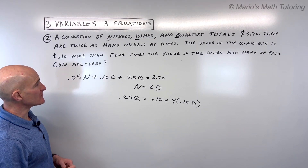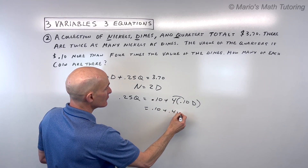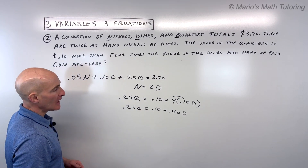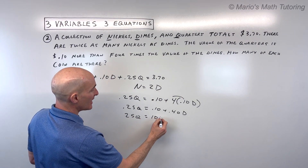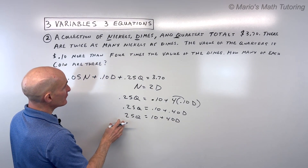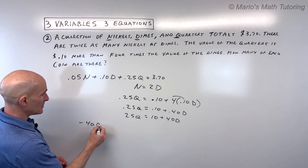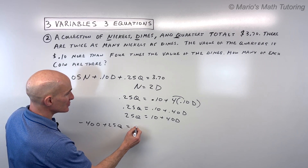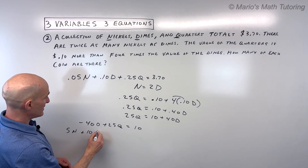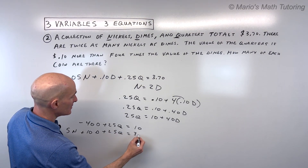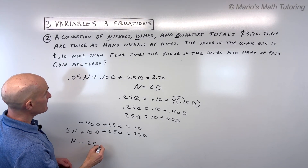Now let's solve. Multiplying through by 100 to eliminate decimals: the third equation becomes 25q equals 10 plus 40d, rearranged to negative 40d plus 25q equals 10. The first equation becomes 5n plus 10d plus 25q equals 370. The second equation rearranges to n minus 2d equals 0. These are our three equations to solve.